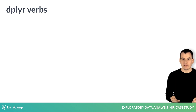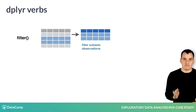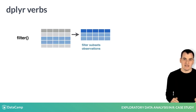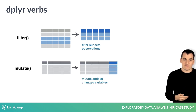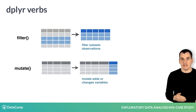For example, the filter verb subsets observations from a data set to remove rows that aren't interesting to us. The mutate verb adds a variable or changes an existing variable.